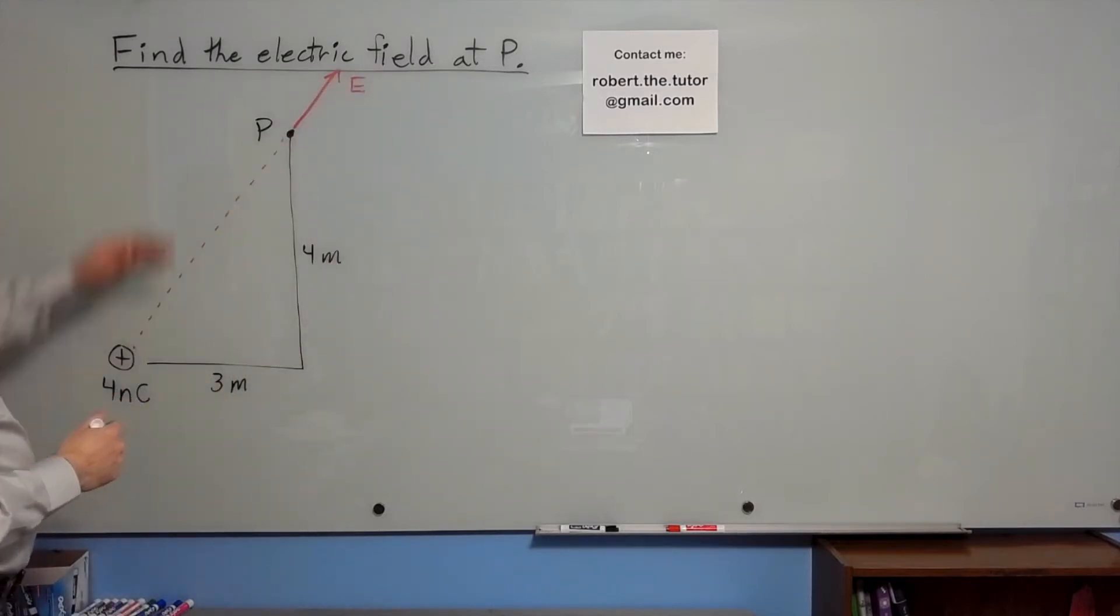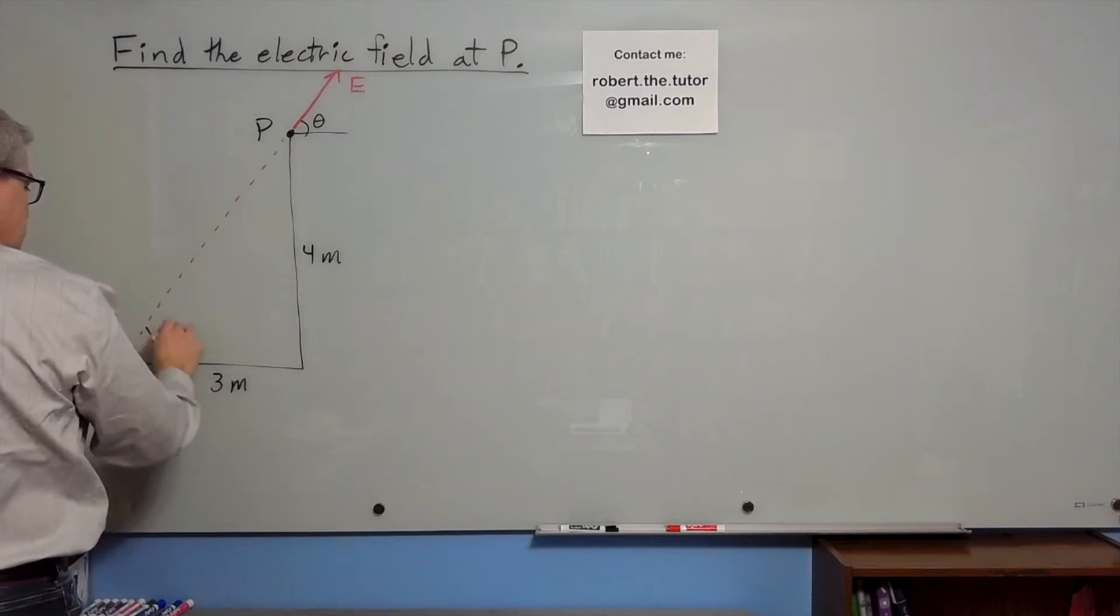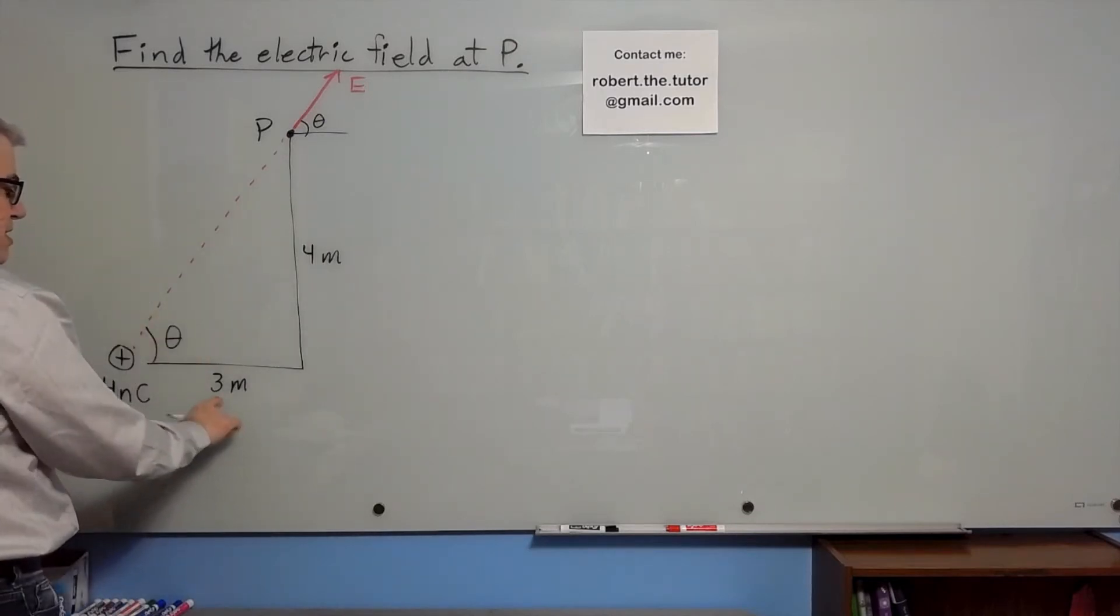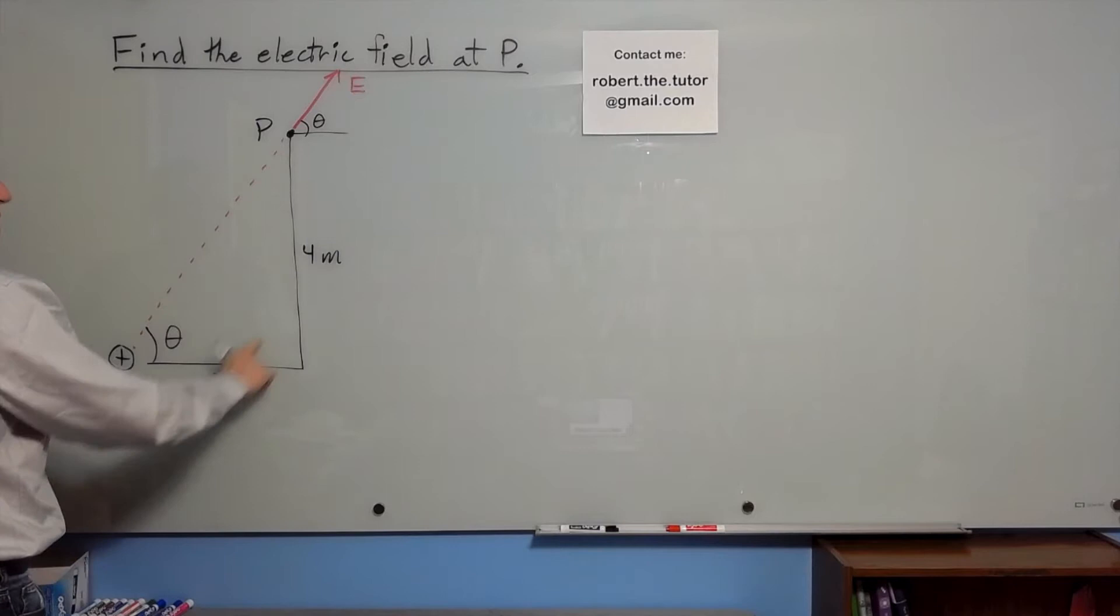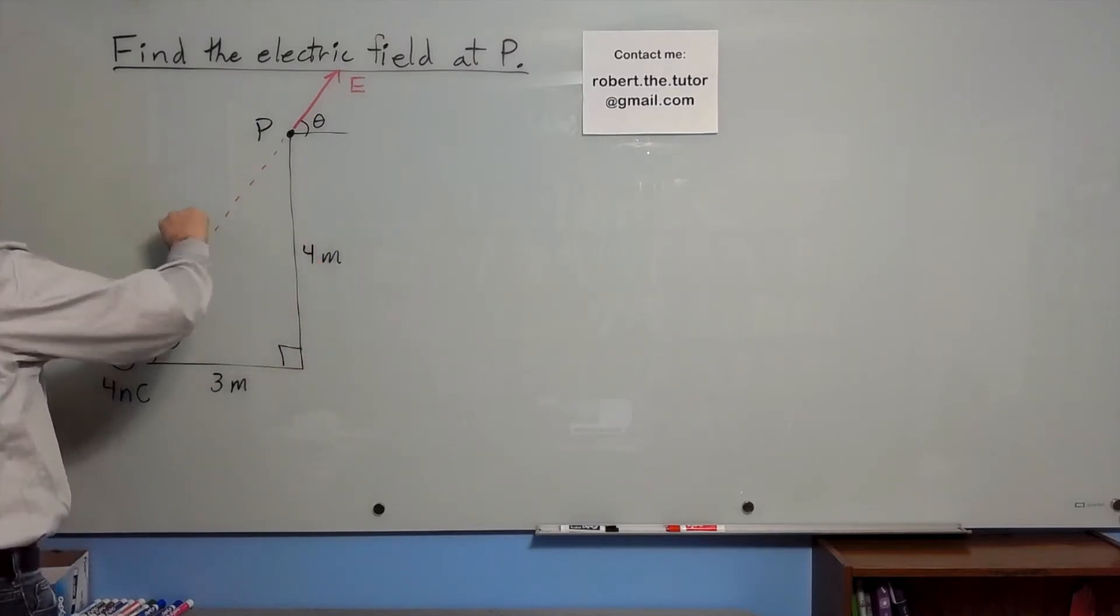And to find the electric field, which is a vector, we need its magnitude and its direction. As far as direction goes, this angle theta is going to be the same as this angle theta. If you notice, this is 3 meters and this is 4 meters. We can use Pythagoras, because this is a right triangle, to find that this is 5 meters.